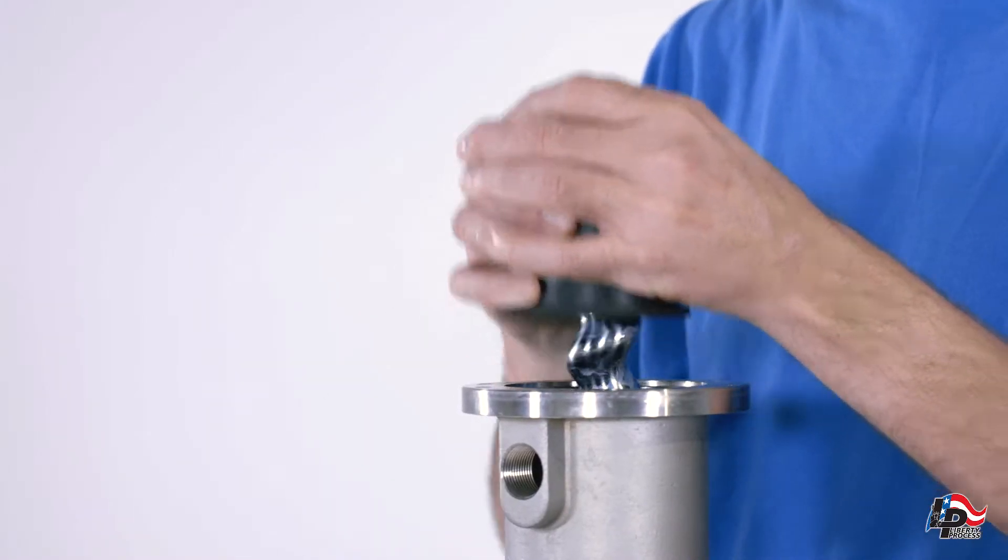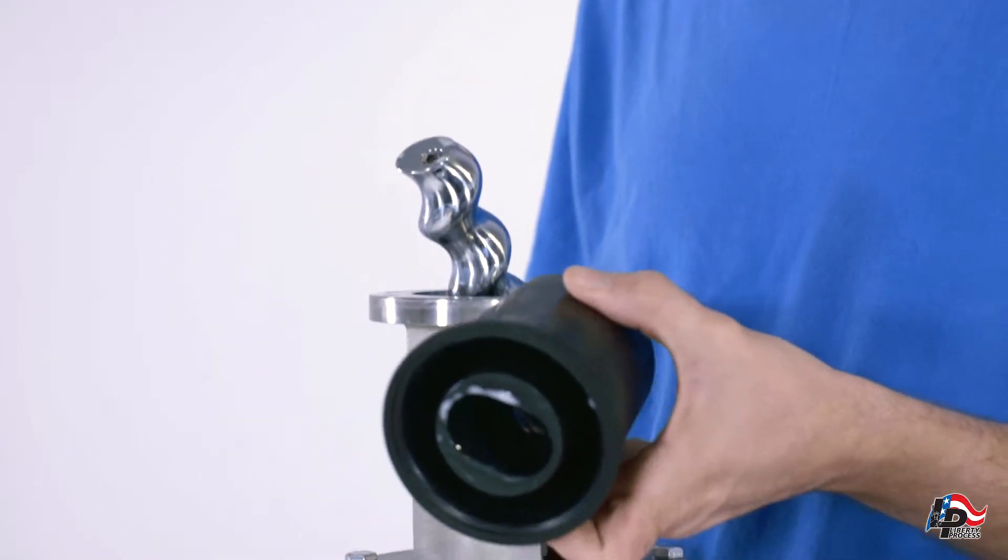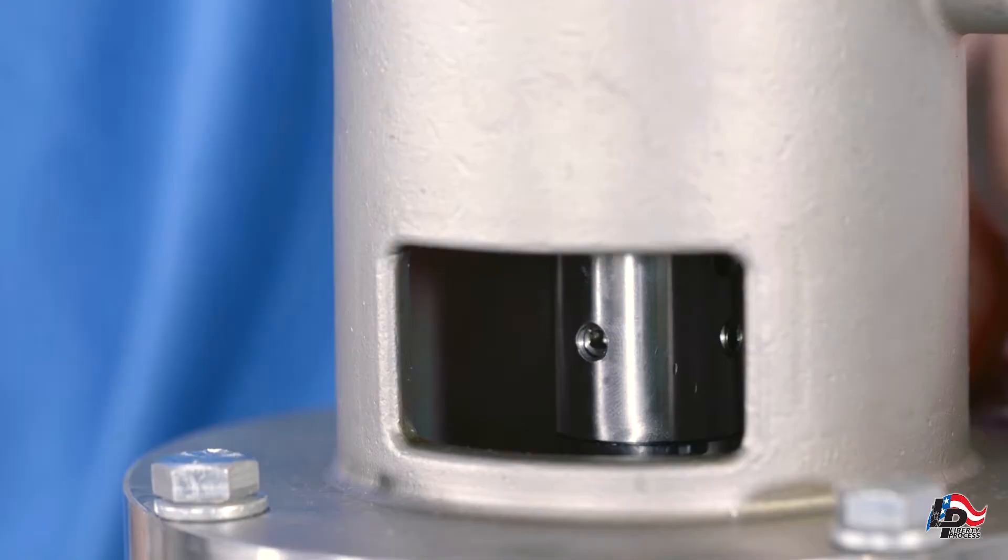Using both hands, remove the pump stator from the pump by lifting it vertically off the pump rotor. The pump rotor, flex joint and shaft mechanical seal will now be exposed.